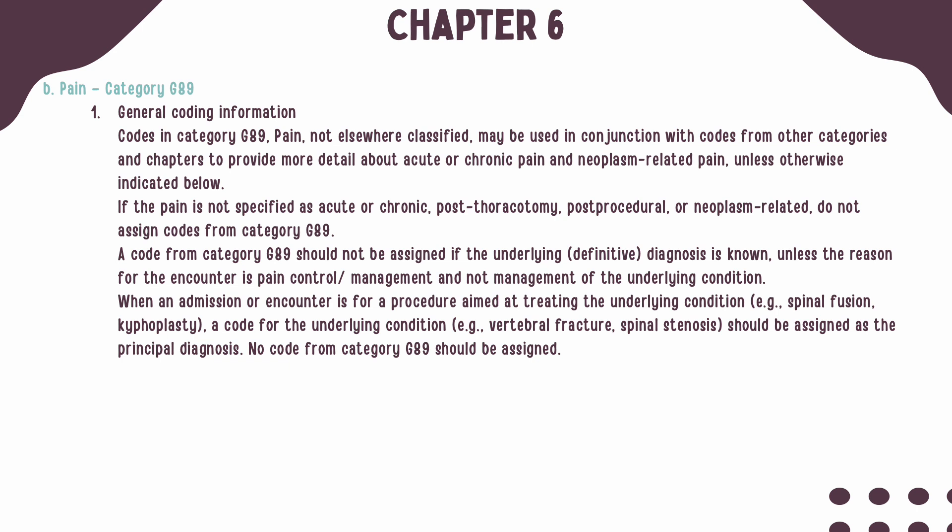Next, if the underlying or definitive diagnosis is known and the reason for the encounter is not for pain control or pain management, Category G89 should not be used. If the encounter is for pain management, then you can use Category G89. Lastly, when an admission or encounter is for a procedure aimed at treating the underlying condition, the code for the underlying condition should be assigned and not a code from Category G89.